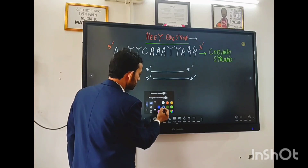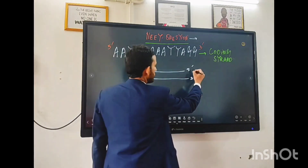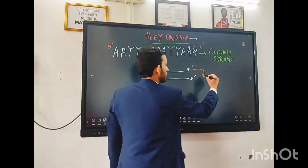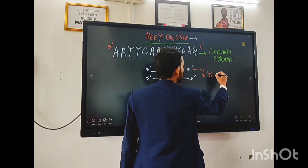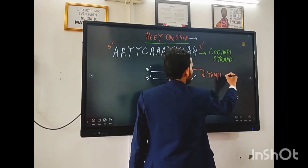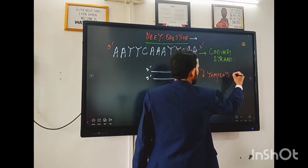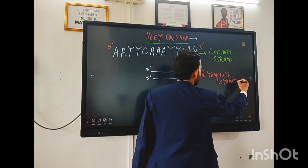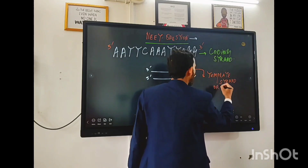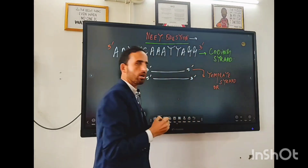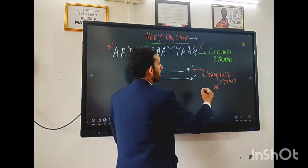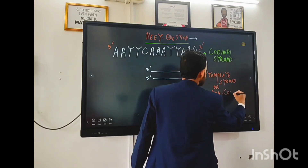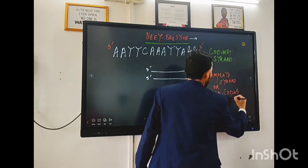Now if we look towards these two types of strands — this upper one, this strand is called as a template strand. This is also called as a non-coding strand. Keep this in mind — this is called as a non-coding strand.